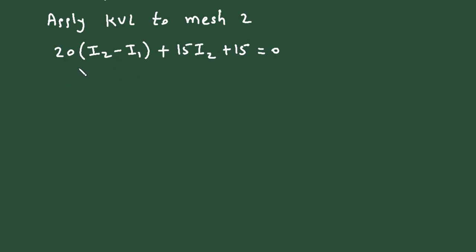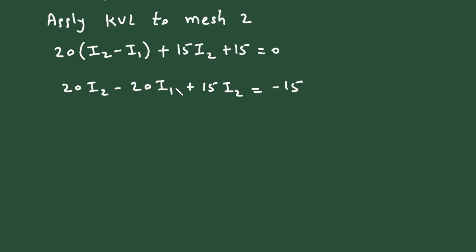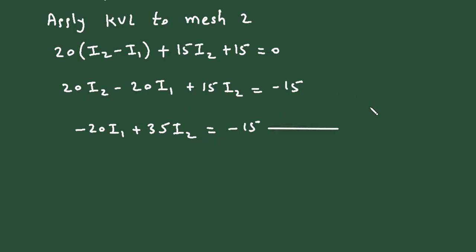Simplifying: 20 I2 minus 20 I1 plus 15 I2 equals 0. Taking 15 to the right side gives minus 20 I1 plus 35 I2 equals minus 15. This is equation number 2.